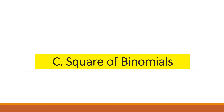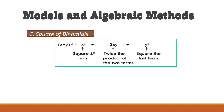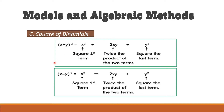We continue with letter C: square of binomials. The model for (x + y)² is: square the first term, plus twice the product of the two terms, plus the square of the last term. If it is subtraction, (x − y)², the only difference is that the sign of the second term is negative.